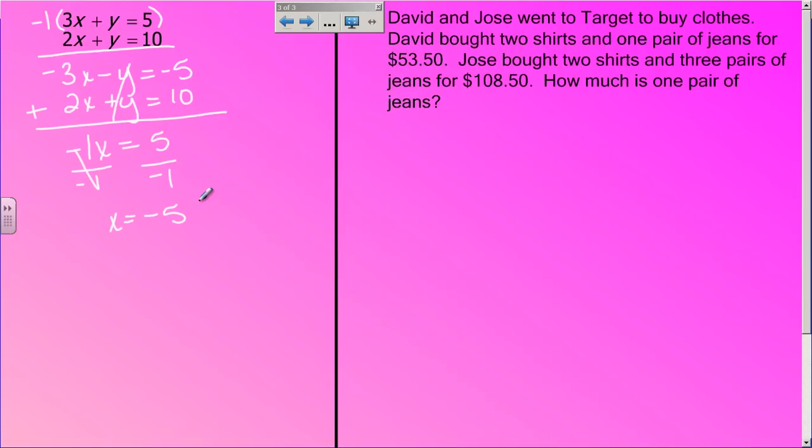Now to find y, like I said before, use an original equation, one of the two that you were given. Don't use something you rewrote. Use an original equation. So I'm going to use the bottom one. I have 2 times negative 5 plus y equals 10. Well, that's negative 10, and when I add 10 to both sides to get y by itself, I get that y equals 20.